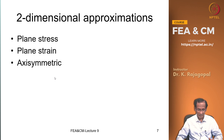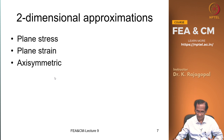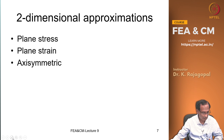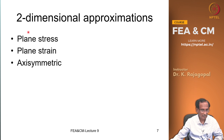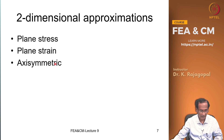The two-dimensional approximations are of three types: one is plane stress, another is plane strain, and the third is axisymmetric. Let us see what each of these means.